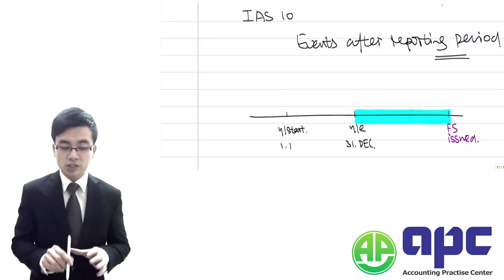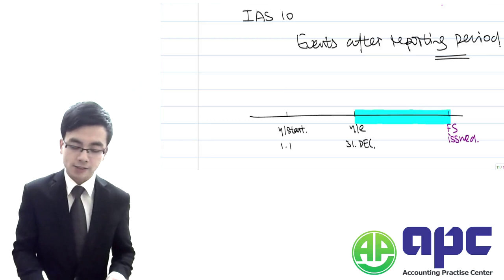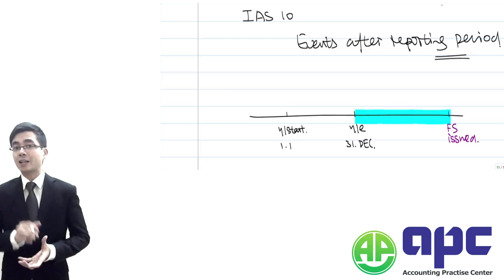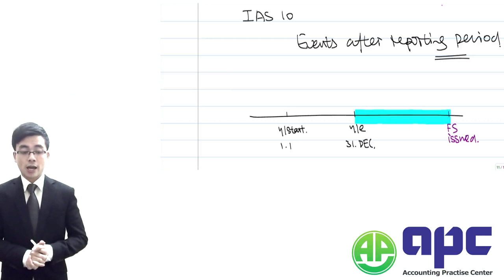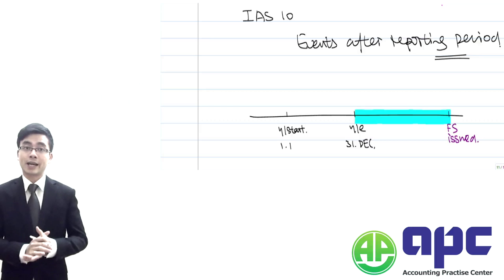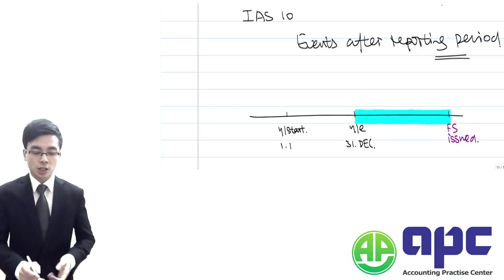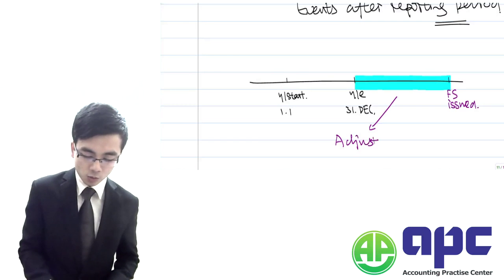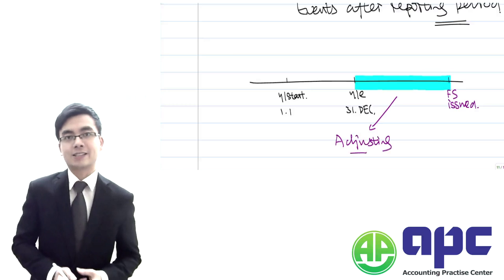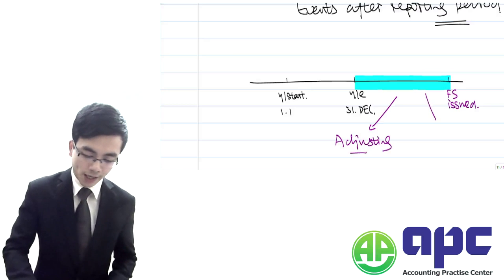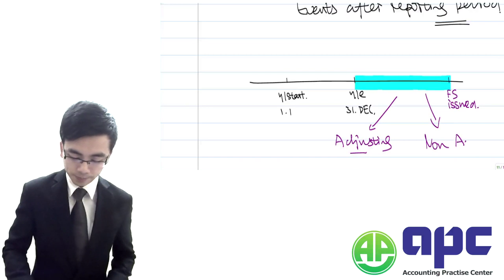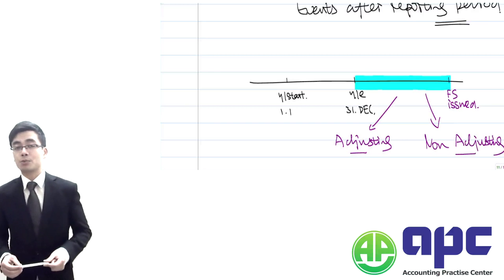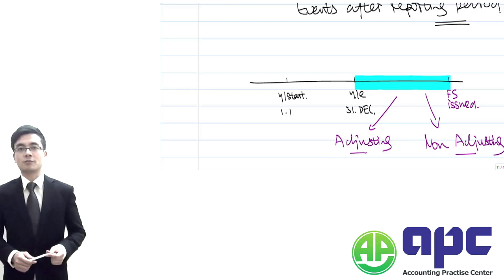Because we start auditing the financial statements after the year-end, it may take 3 to 4 months before they are issued to shareholders at the annual general meeting. Any events happening within this period need to be accounted for. These events can either be adjusting events — meaning we make adjustments — or non-adjusting events, where we simply disclose those events in the notes to the financial statements.